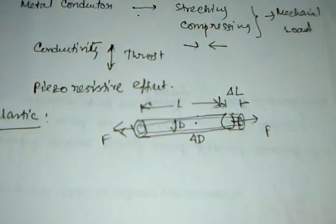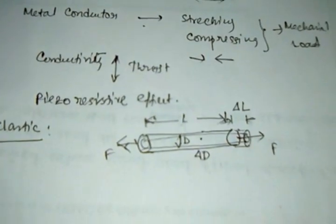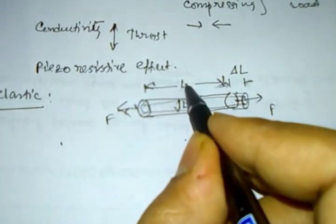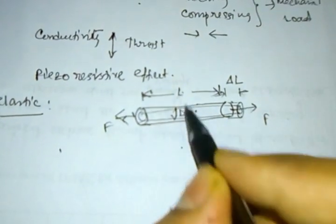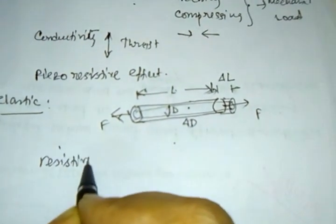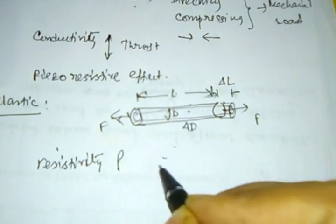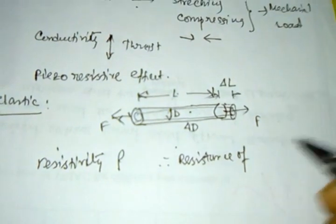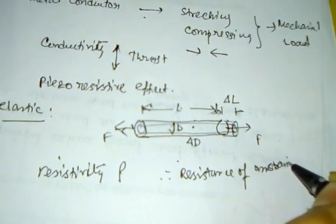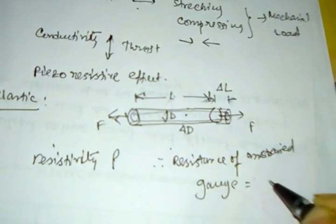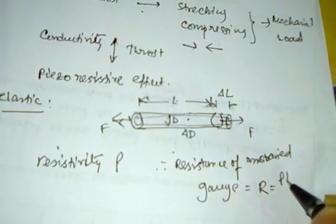Now what will happen? The resistance of the unstrained gauge — what was the resistance? The length is L, the diameter is D, and if we consider the resistivity is rho, then the resistance of the unstrained gauge is R equals rho L by A.